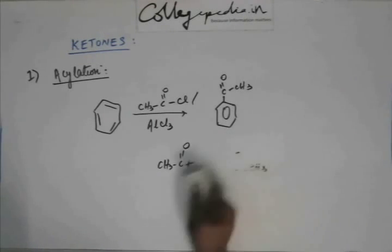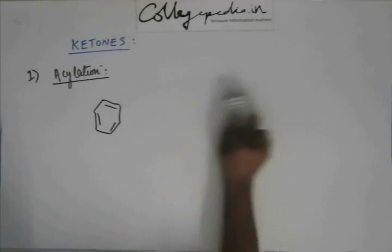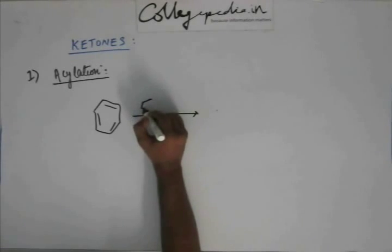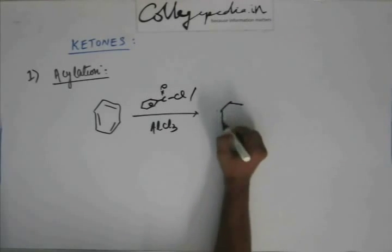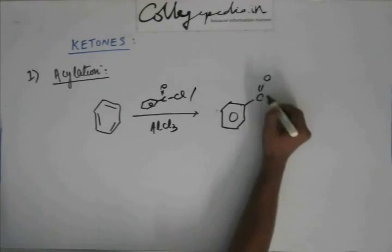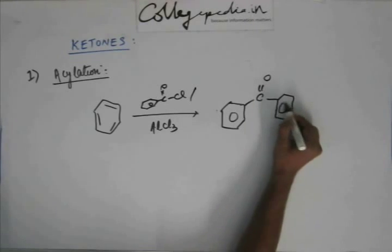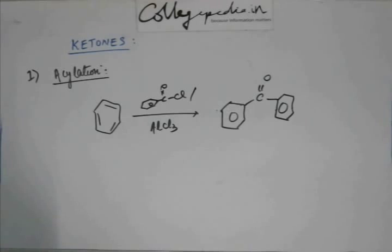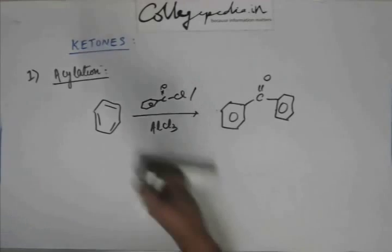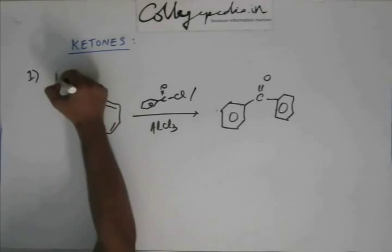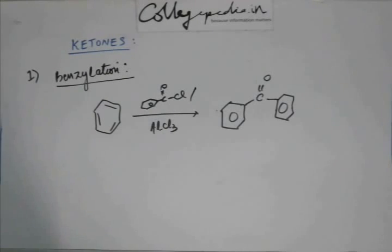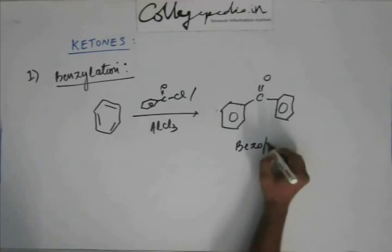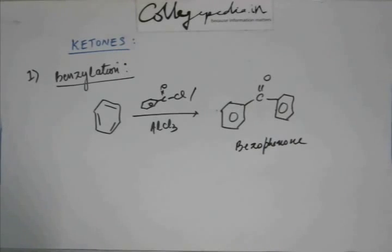There could also be benzylation, similar to acylation. For example, if we don't take acyl chloride but instead take benzyl chloride, then in this case we will have benzophenone as our product. The mechanism will be exactly the same as in acylation. Remember, this compound is called benzophenone; the last one was acetophenone. We have seen this before, so it should not be a problem.